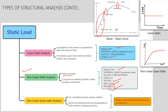The third analysis is non-linear quasi-static analysis. It is a simplified dynamic analysis method where inertial and damping forces are disregarded, but loading conditions change over time. As shown in the graph, the load keeps changing with respect to time — unlike linear static where load is constant. This non-linear quasi-static analysis is mostly used in deep drawing and punching processes.